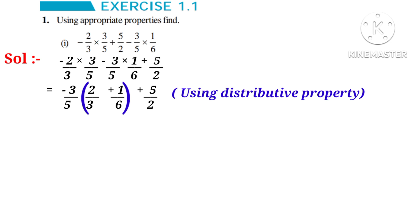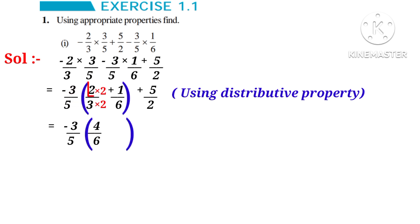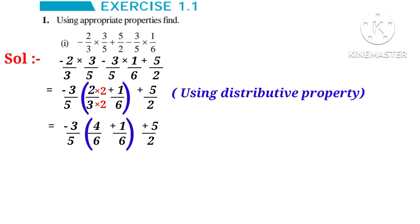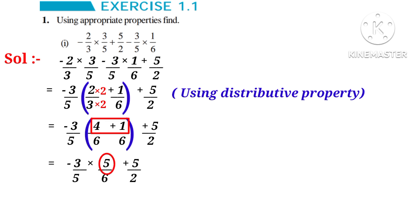Observe that in the bracket the fractions have different denominators. So to make them like fractions, we multiply the numerator and denominator of the first fraction by 2. Then we get minus 3 by 5 into (4 by 6 plus 1 by 6 plus 5 by 2). Now the fractions are converted into like fractions, so we can simply add: minus 3 by 5 into (5 by 6 plus 5 by 2), because 4 plus 1 is 5.